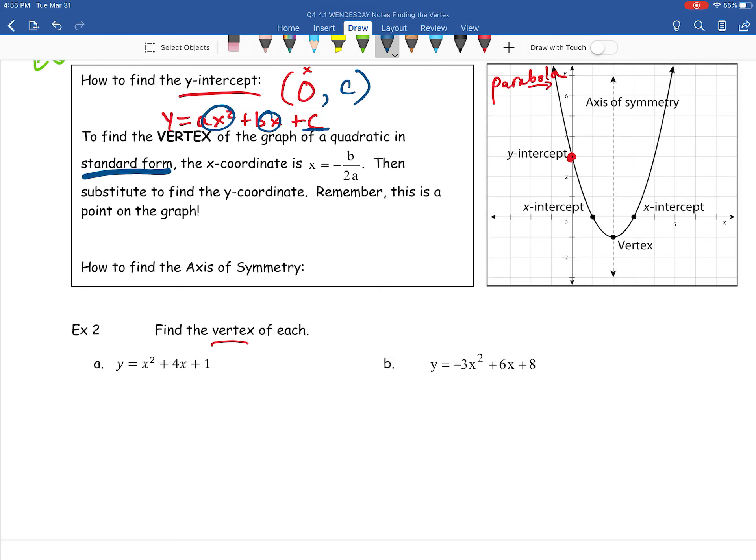We're still in standard form. Your x value is going to be equal to the opposite of b over 2 times a. Then you have to substitute that in to find out your y-coordinate. And then this is a point on the graph. As you can tell, our vertex, that's where we're going to see our minimum or our maximum value occur.